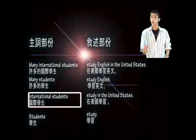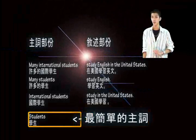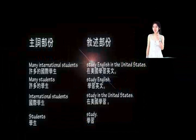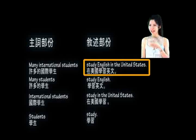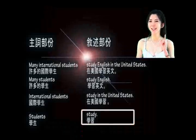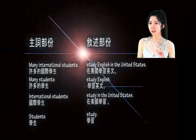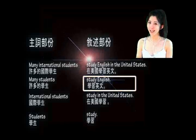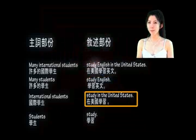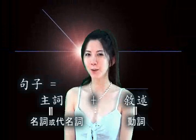International students。所以，students就是一個最簡單的主詞。以後我們再提到主詞，指的就是這個最簡單的主詞。敘述也是一樣的。例如，'study English in the United States' 是一段完整的敘述。最核心的單字是動詞study。Study什麼？Study English。在哪裡study？In the United States。所以，動詞是最簡單的敘述。一個句子是由主詞和敘述組合而成的。主詞就是名詞或代名詞，敘述就是動詞。